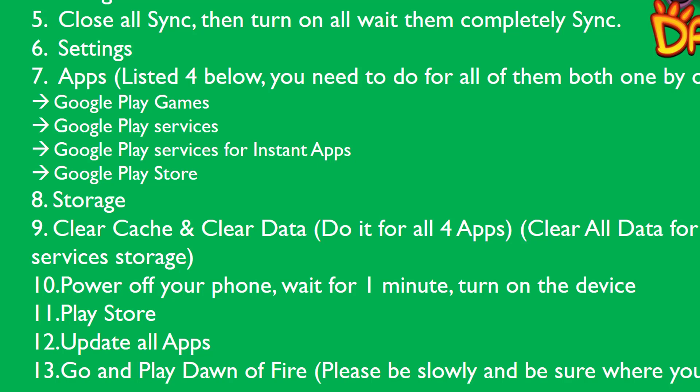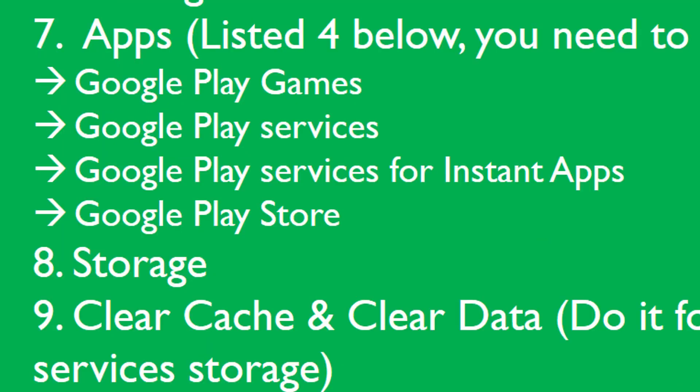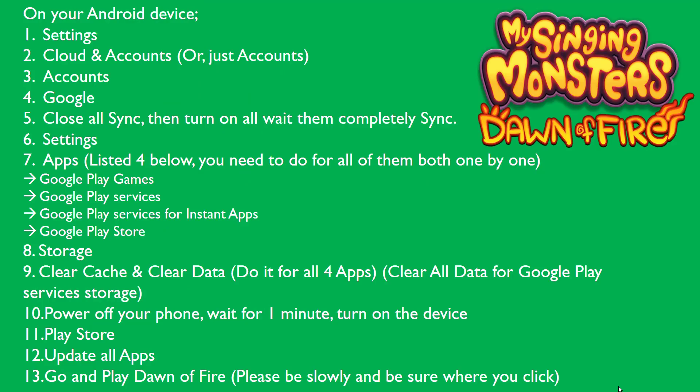Then go back to your mobile phone's home screen. Once again, go to Settings and find these four applications in the list: Google Play Games, Google Play Services, Google Play Services for Instant Apps, and Google Play Store. Select Storage for each.